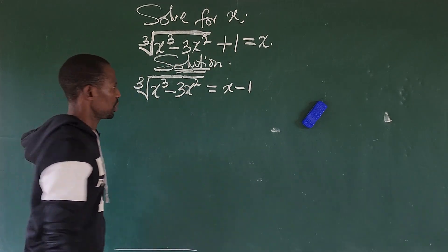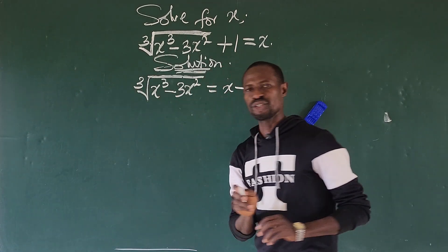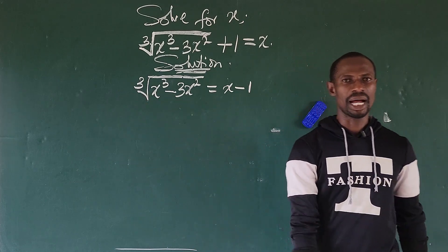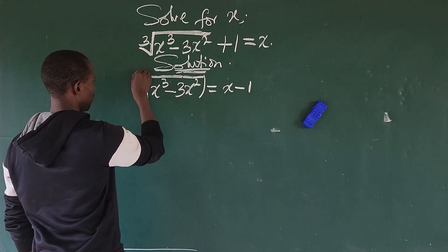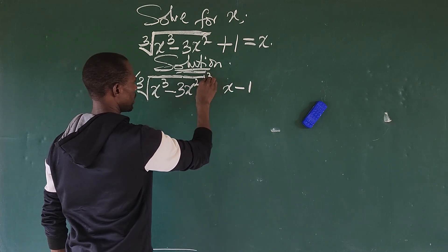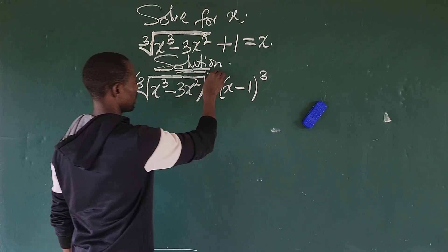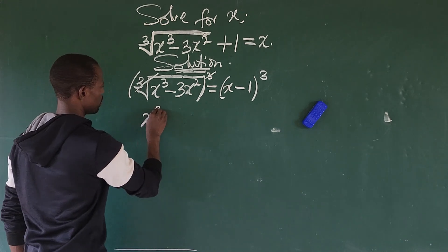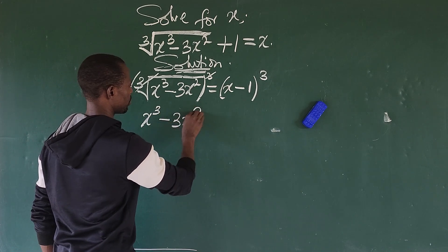At this point, all we need to do is take the cube of both sides to eliminate this radical. Raising both sides to the power of 3, we are left with x to the power of 3, minus 3x to the power of 2, on the left side, equal to the cube of (x minus 1) on the right.